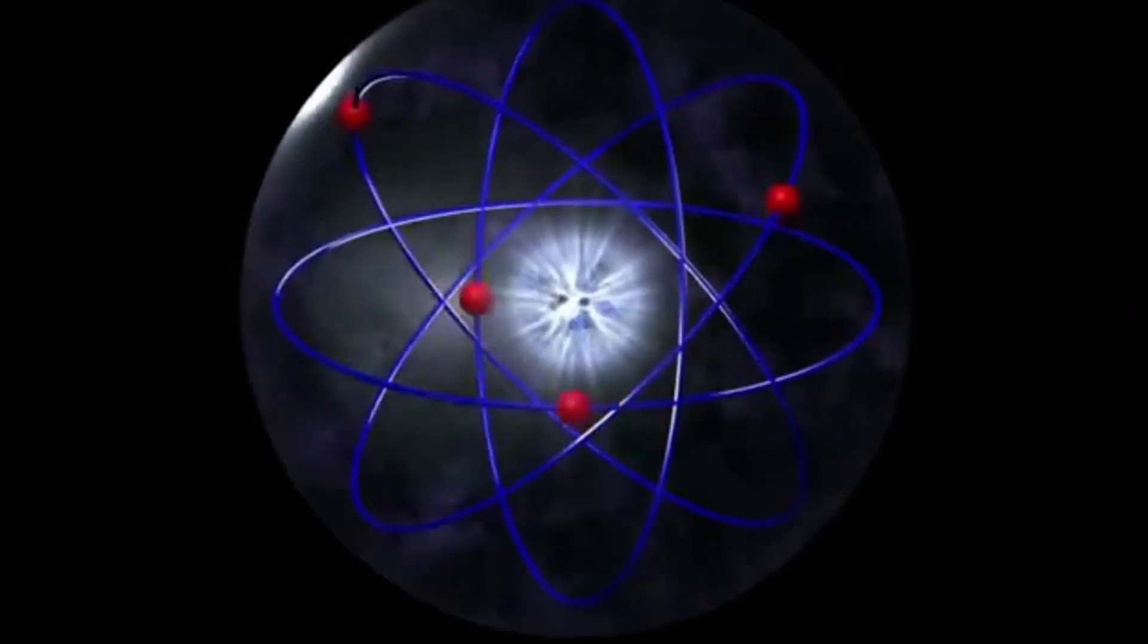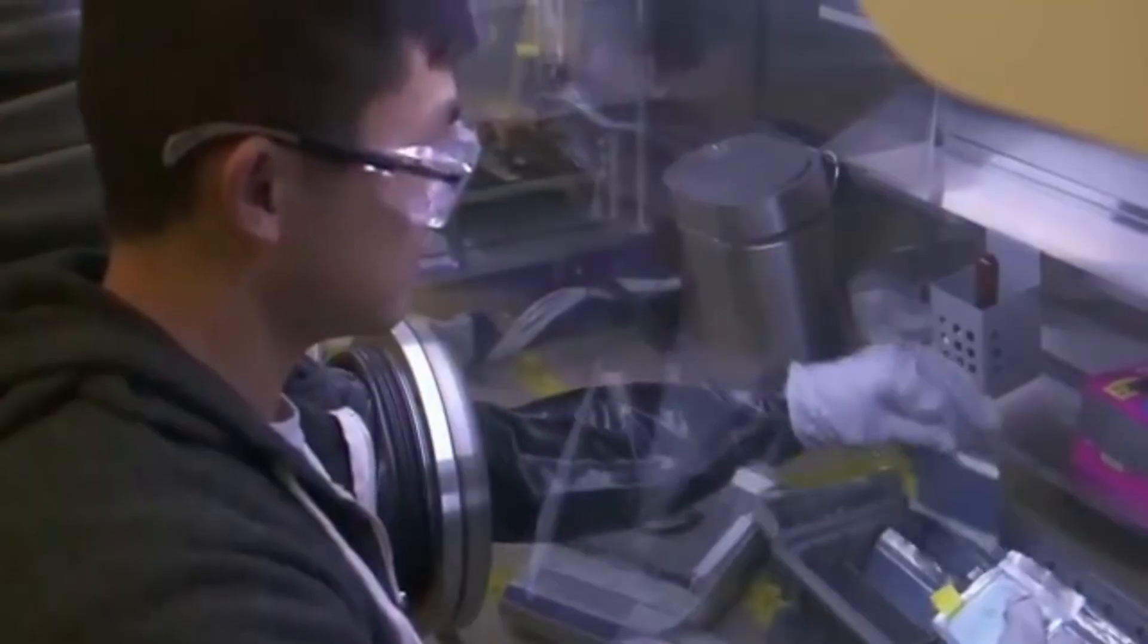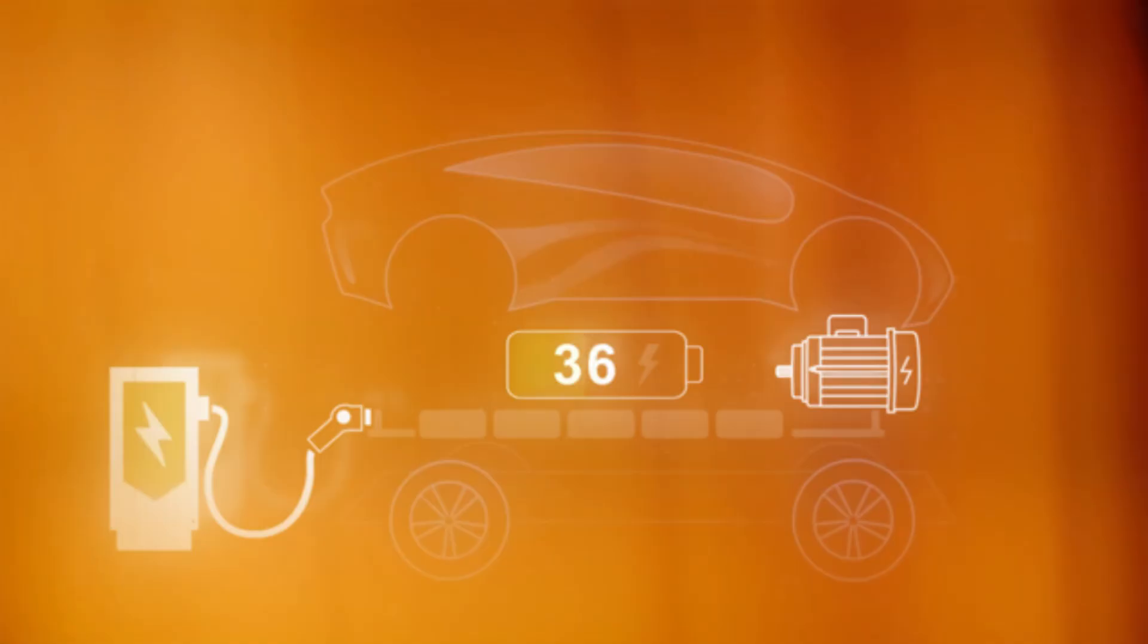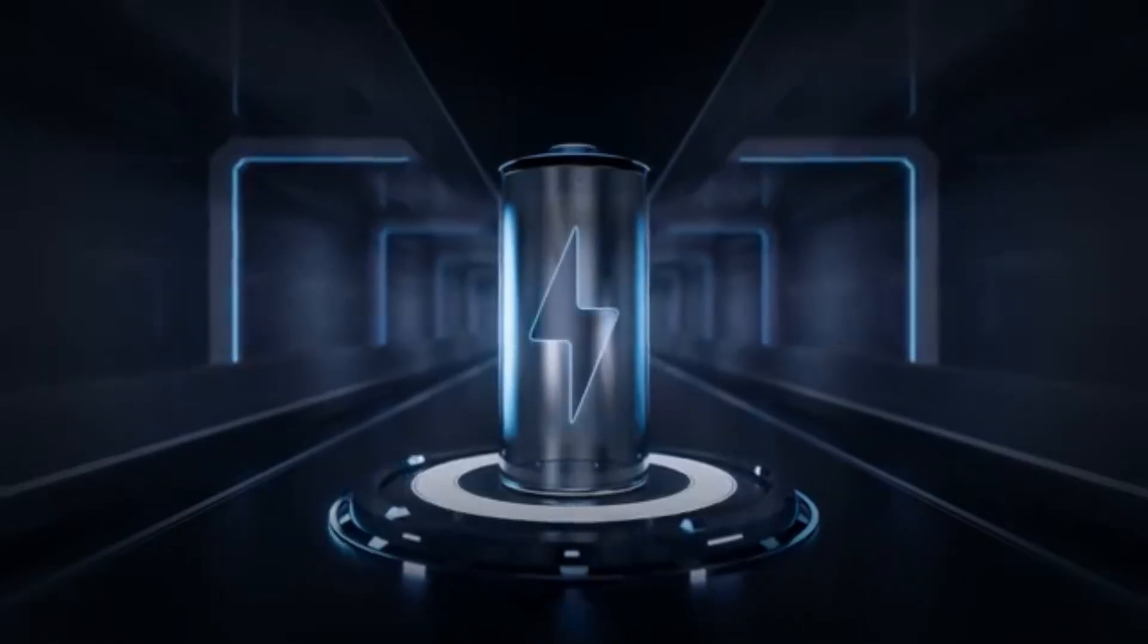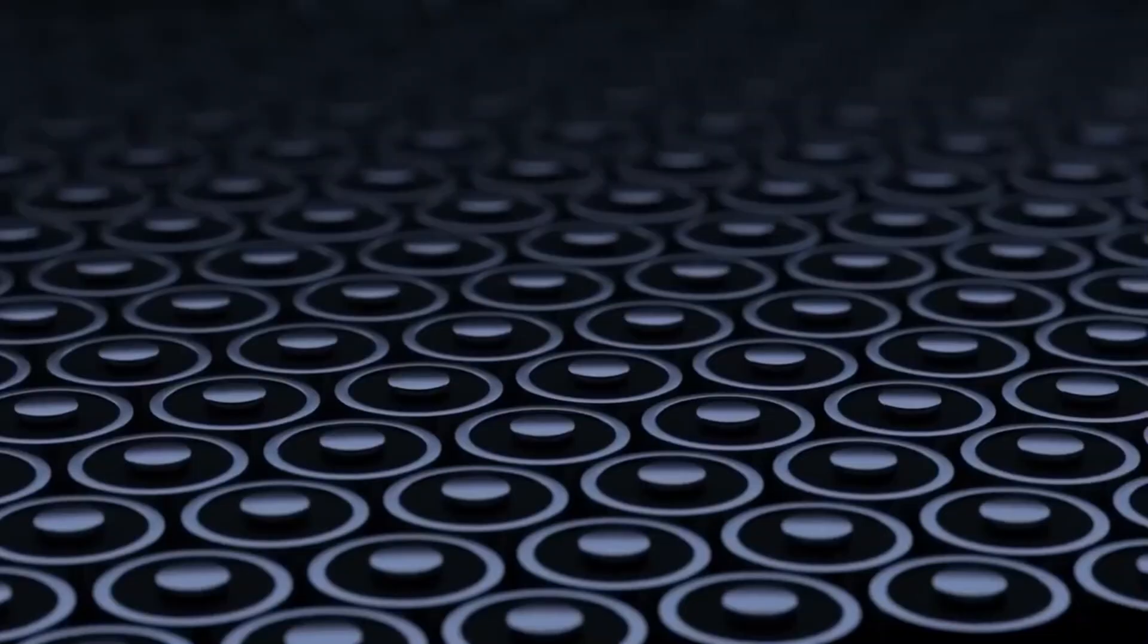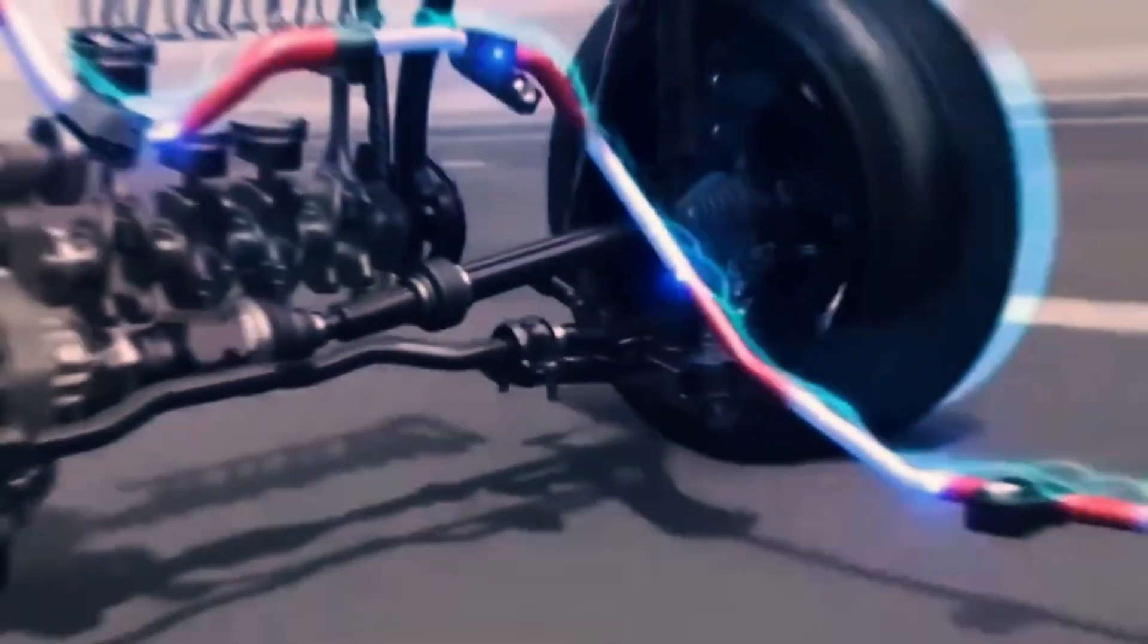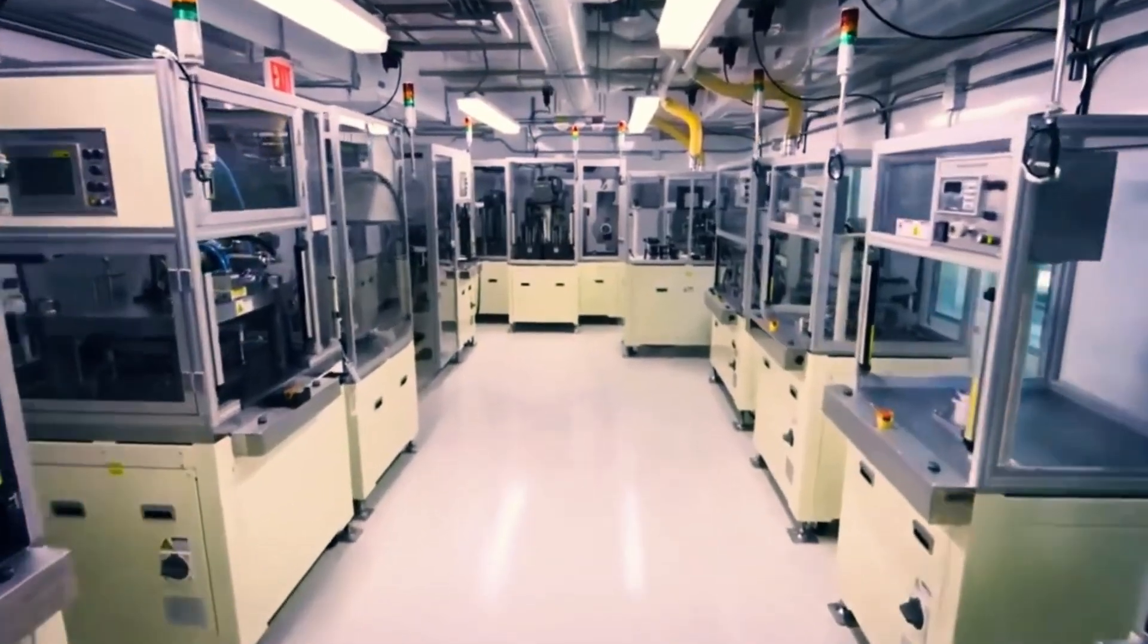One innovative solution proposed by Betavolt to address the current power limitations is to combine multiple BV-100 batteries in parallel. By integrating several BV-100 units, the cumulative power can reach levels necessary for more energy-intensive devices. This modular approach allows for flexible scaling of power output depending on the specific needs of the application, while introducing challenges related to managing the combined energy and ensuring safety protocols.